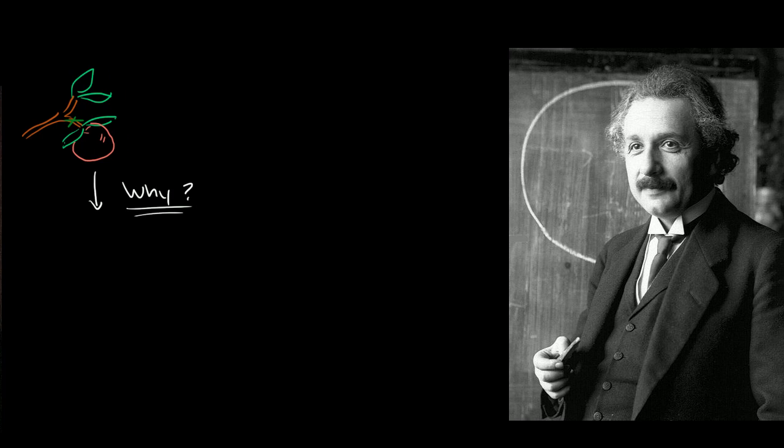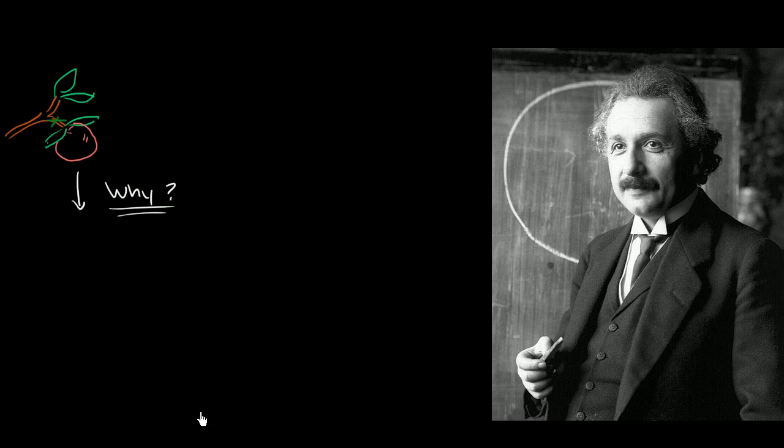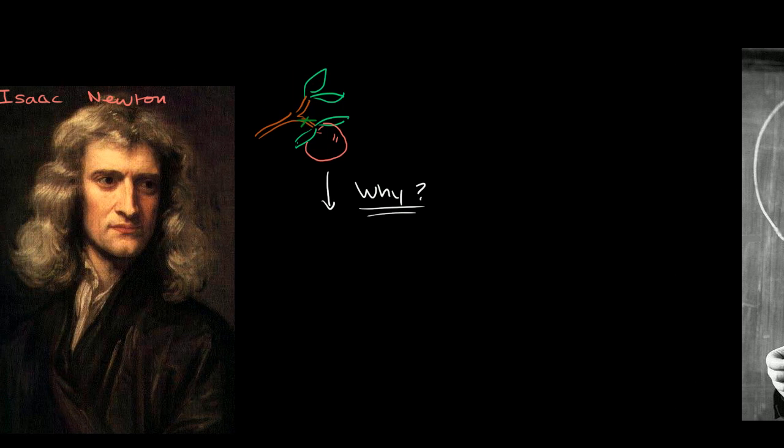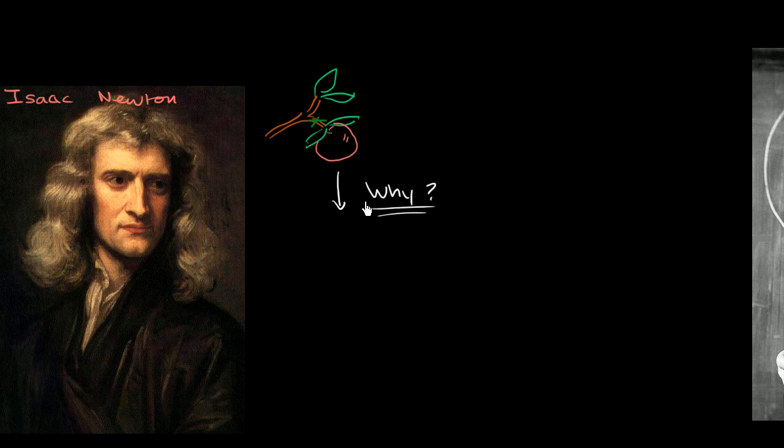That question took him down an entire line of reasoning that set up the basis for all of classical mechanics, which for the most part we still use today. It's been tweaked a good bit by this gentleman in the last hundred years, but for most purposes, when we're engineering things on the surface of the planet and not going close to the speed of light, we can still use the mathematics Isaac Newton came up with. He theorized that gravity is the universal law of gravitation.